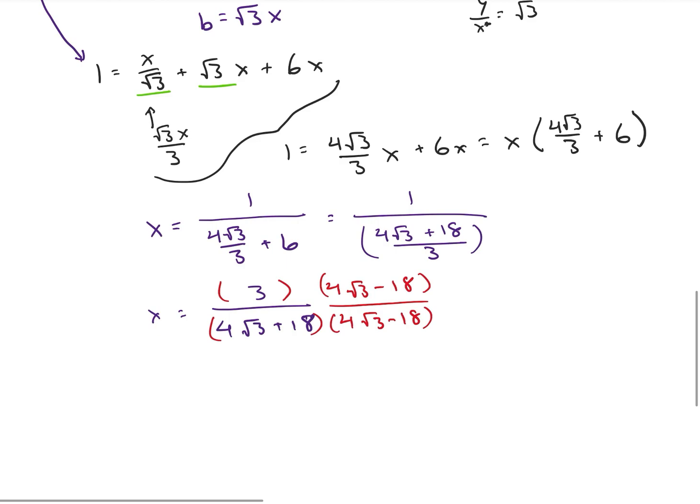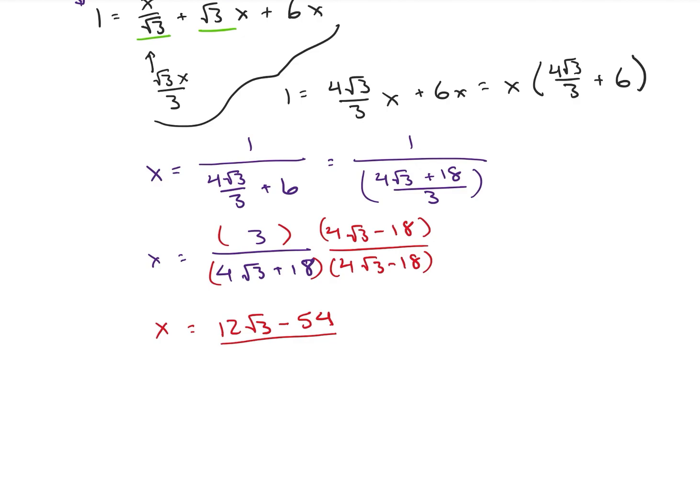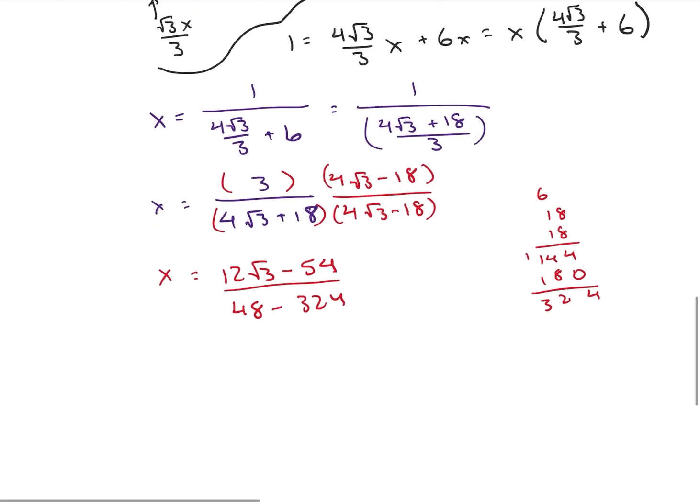And that's going to end up giving us x is equal to 12 root 3 minus 54 divided by 4 root 3 squared. So 16 times 3, which is 48 minus 18 squared. I don't have a calculator. So 144 plus 180, 324.